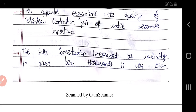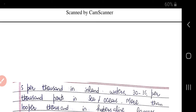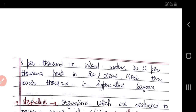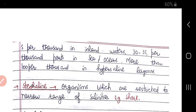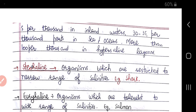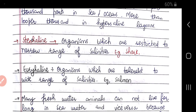Salt concentration is measured as salinity in parts per thousand (PPT). In inland waters such as streams, salinity is less than 5 PPT. In seas and oceans, salinity is 30 to 35 PPT. In hyper saline lagoons, salinity is greater than 100 PPT.